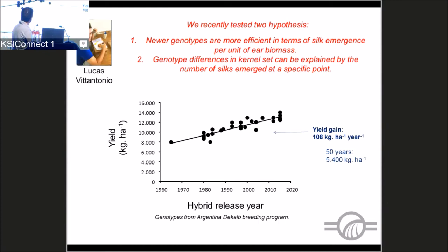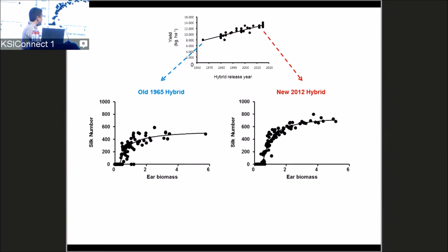We used genotypes released across 50 years — from 1965 to 2015 — totaling 32 genotypes grown at four different environments, done in collaboration with Dekalb, the largest maize seed company in Argentina. The yield gain across those 32 genotypes is shown. Interestingly, we did not see any real change with year of release in the minimum ear biomass required to reach silking.